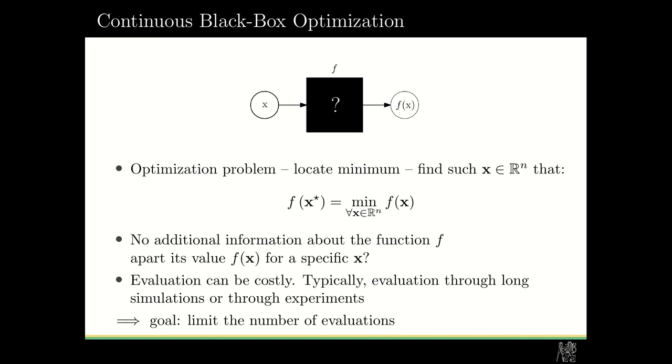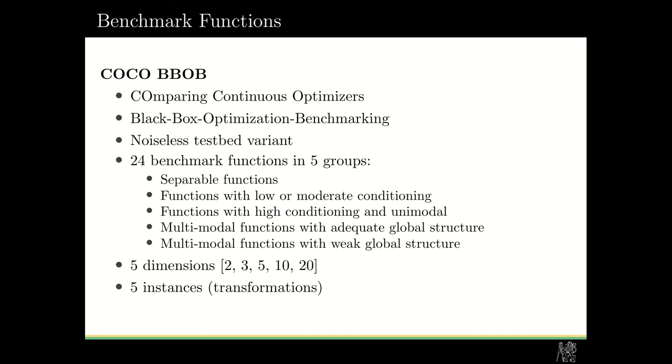To evaluate our models, we used a widely used benchmark set of functions called Coco Bebop, specifically in its Noiseless variant. This benchmark set consists of 24 benchmark functions divided into five groups: separable functions, functions with low or moderate conditioning, functions with high conditioning, multimodal functions with some global structure, and multimodal functions with weak global structure. We used it in five different dimensions: two, three, five, ten, and twenty.